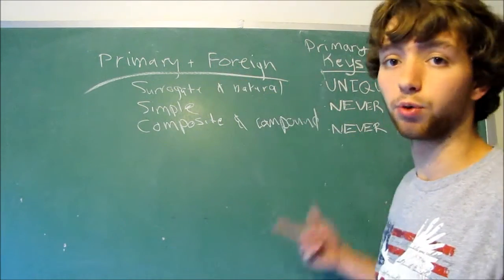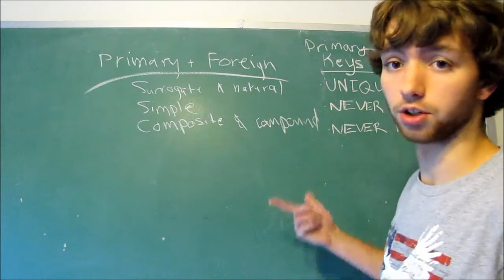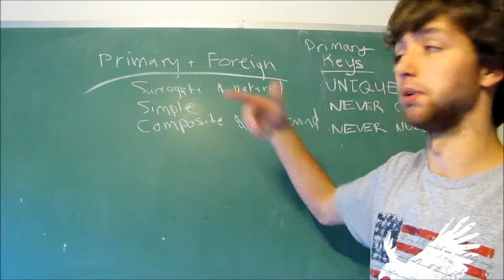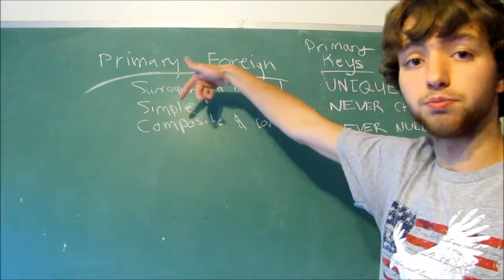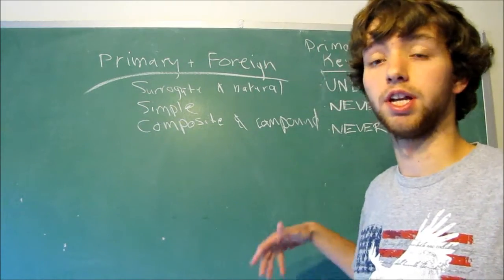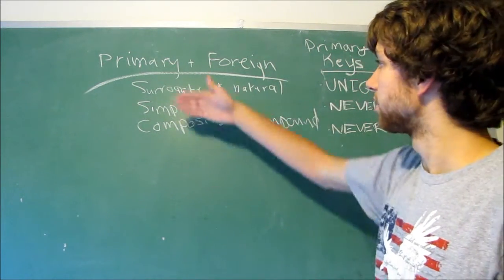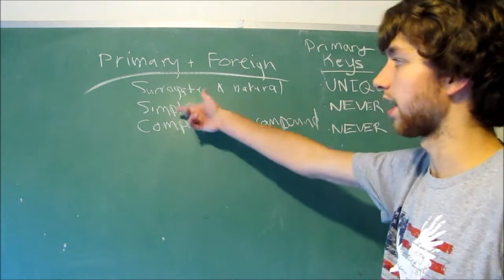When you define your primary or foreign keys, you're not going to have to specify if it's a surrogate, natural, simple, composite, or compound. This is for our sake to design the best way, because it's, for example, do you want to use composite keys or do you want to use simple keys? That's a good question. If you decide you want to use simple keys, which, by the way, surrogate and natural is the kind of thing you do throughout your entire database.